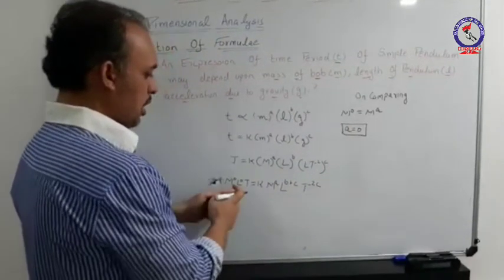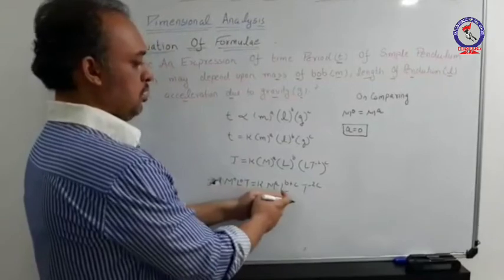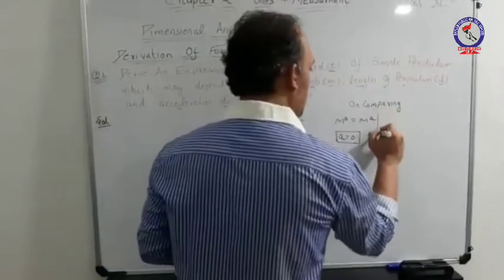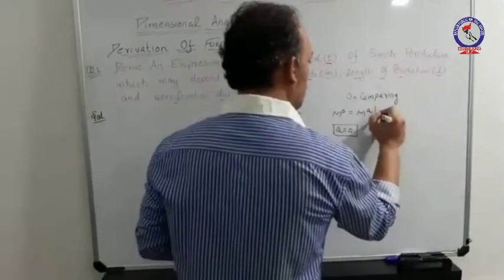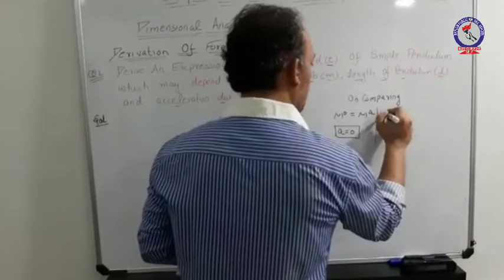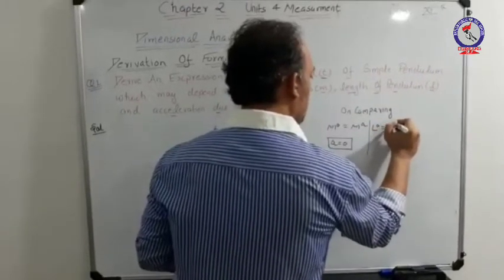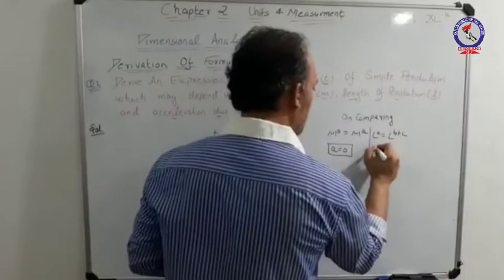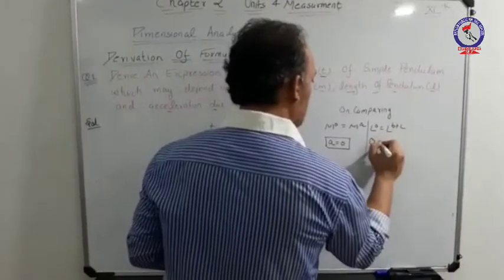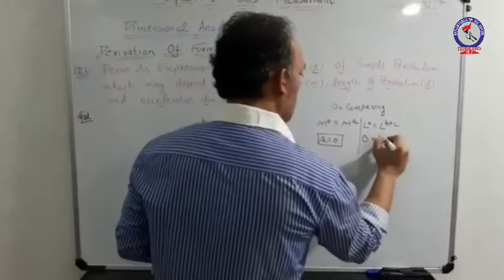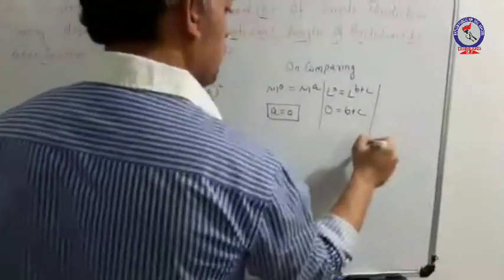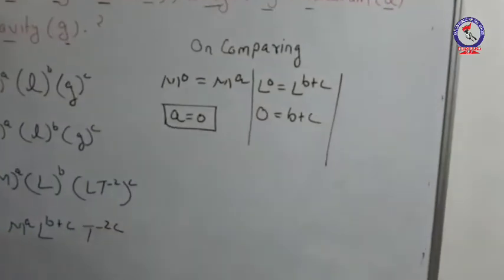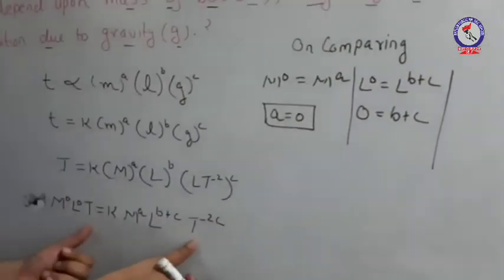For length: L to the power 0 on the LHS equals L to the power B plus C on the RHS. Comparing the dimensions of length, we get the second equation: 0 equals B plus C.